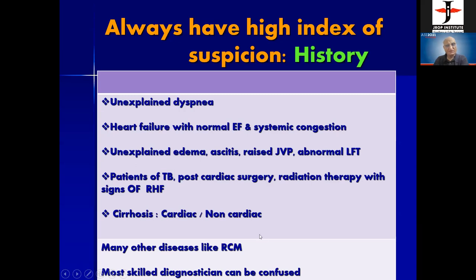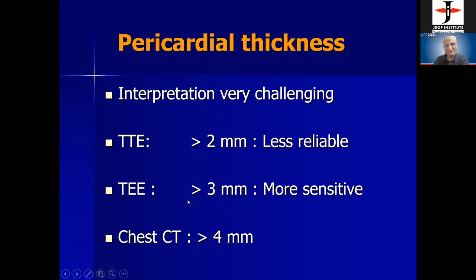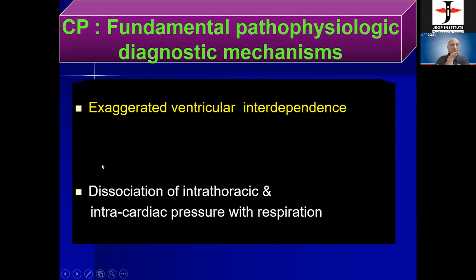Cirrhosis and restrictive cardiomyopathy can be confused with constrictive pericarditis. Regarding pericardial thickness: on transthoracic echo, more than 2 mm is the criterion but it is difficult to measure and less reliable. On transesophageal echo, more than 3 mm is more sensitive. Chest CT is very important for detecting pericardial thickness and calcification — specifically more than 4 mm. Remember: 2 mm TTE, 3 mm TEE, 4 mm CT.